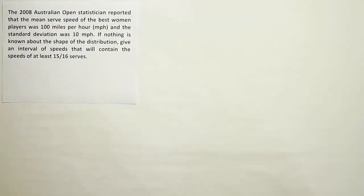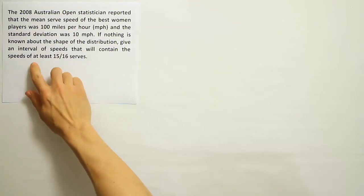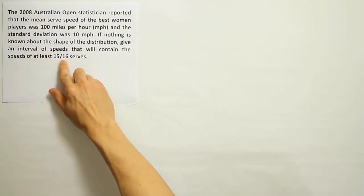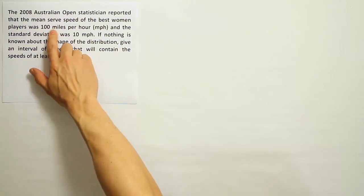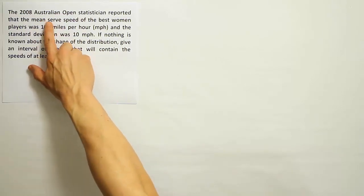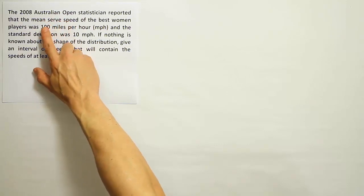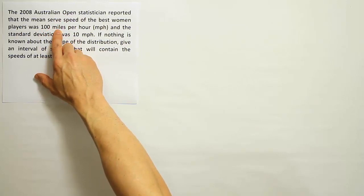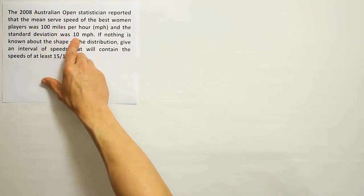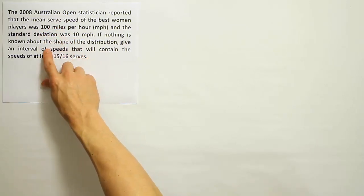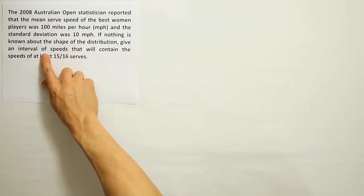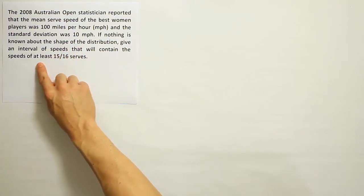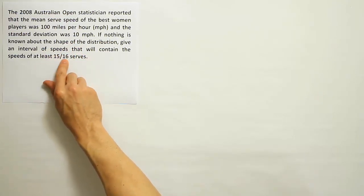Okay, in this problem they ask us to determine an interval that would capture this percent of the data or this proportion of the data. The interval involves players serve speed. In 2008 the Australian Open statistician reported that the mean serve speed of the best women players was 100 miles per hour and the standard deviation was 10 miles per hour. If nothing is known about the shape of the distribution, give an interval of speeds that will contain the speeds of at least this proportion of serves.